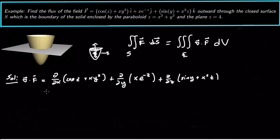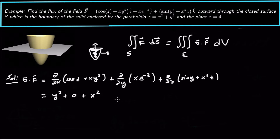Now take the partial derivatives. The divergence equals: the derivative with respect to x of the first component gives y². Then y² + 0, because the derivative of xe^(−z) with respect to y is zero since there's no y anywhere. And then the derivative of the last component with respect to z gives x². So the divergence is x² + y².